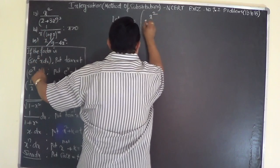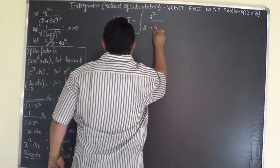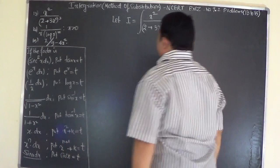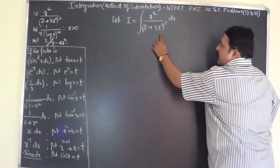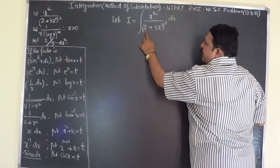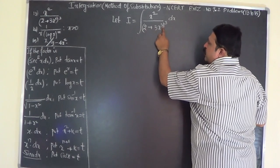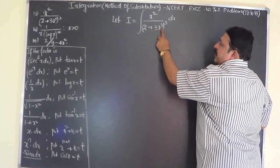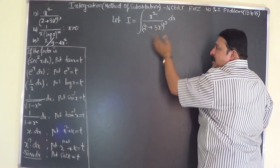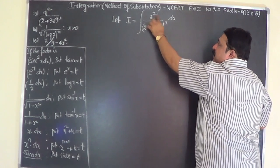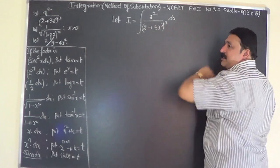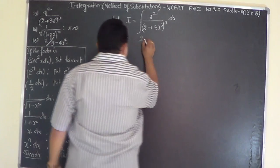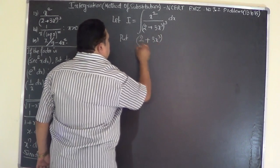Problem 13: I equals the integral of x² divided by (2 + 3x³)³ dx. If you observe this problem, you can easily see that if you put (2 + 3x³) as t, then by differentiating 3x³ you get 9x², and that x² term is present in the numerator, so x² dx gets replaced.